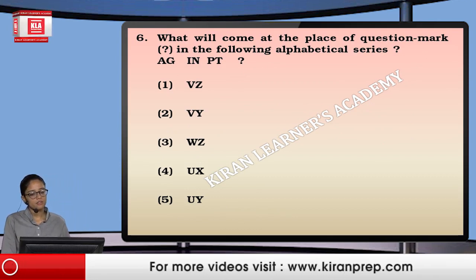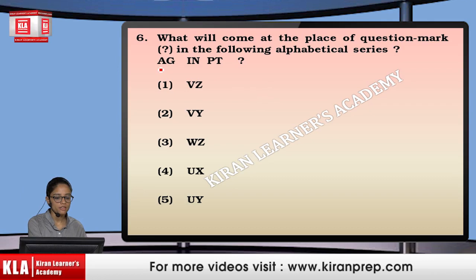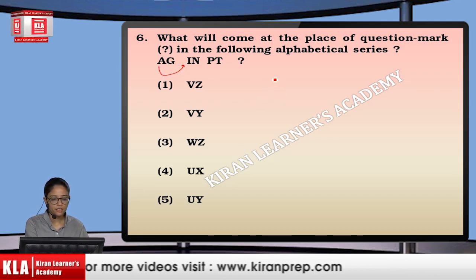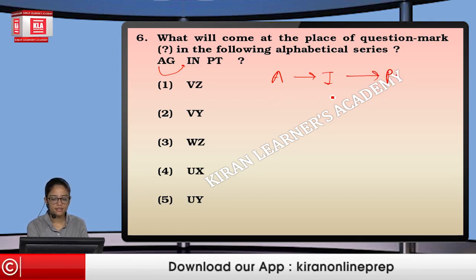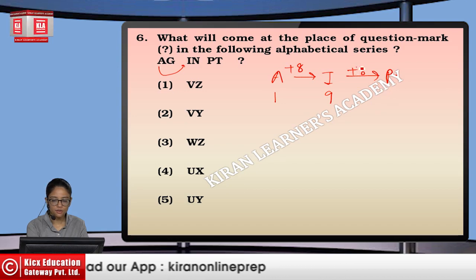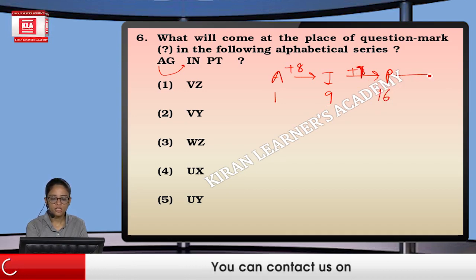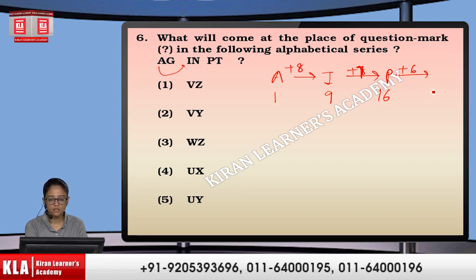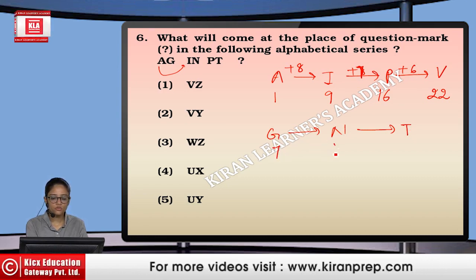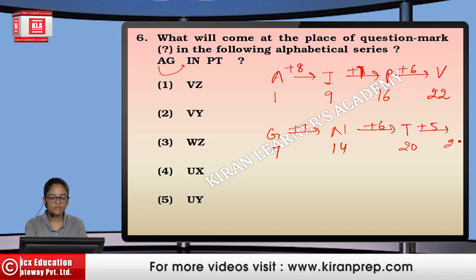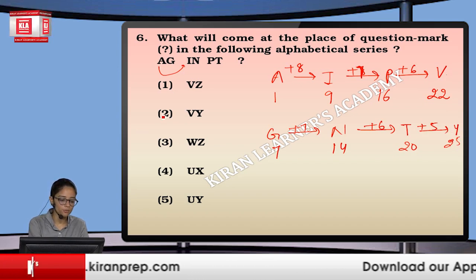Next: what will come in the question mark in the following alphabetic series? We compare the first letter of each term: A, I, P. A is 1, I is 9 — plus 8; then plus 7 gives 16. Next we do plus 6, so 16+6=22, that is V. Similarly, G to N is plus 7, N to T is plus 6, so next is plus 5, giving 25 — that is Y. The answer is VY, option number 2.